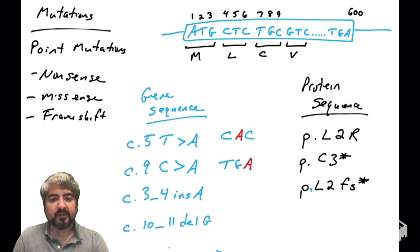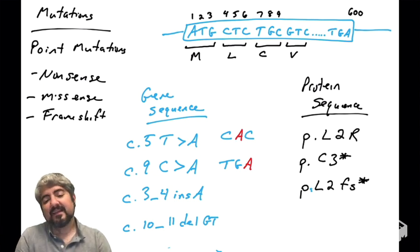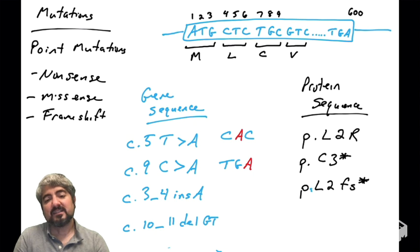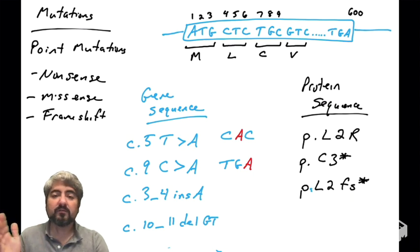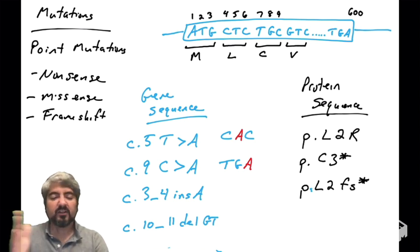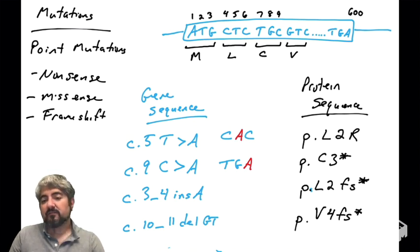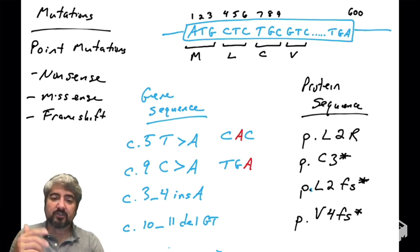What about when you see two numbers and then DEL, followed by GT? That is a deletion of nucleotides 10 and 11 — the G and the T are deleted. What effect would this have on the protein? If you change the number of nucleotides by one or two — deleting two or deleting one — you're going to shift the reading frame. That is a frameshift mutation. This would be written as p.V4fs, and again, odds are there's going to be a stop codon somewhere down the line.